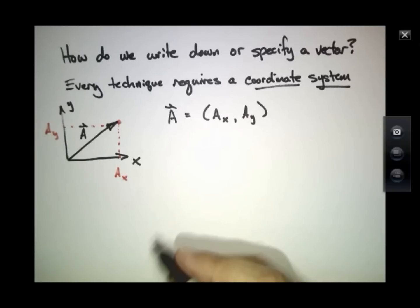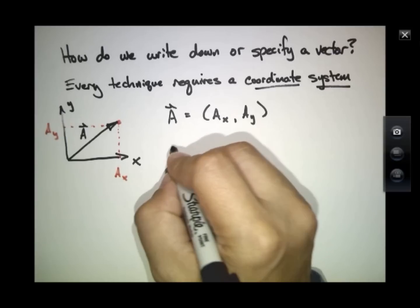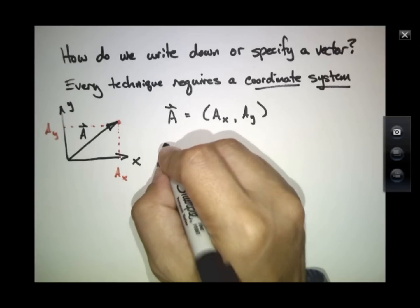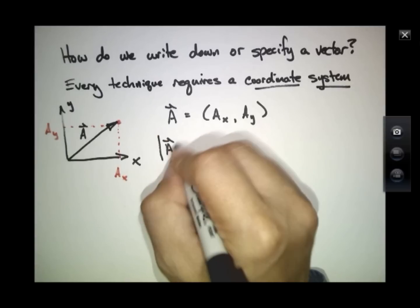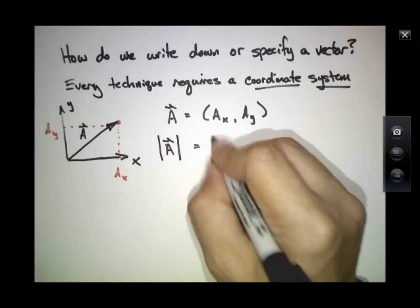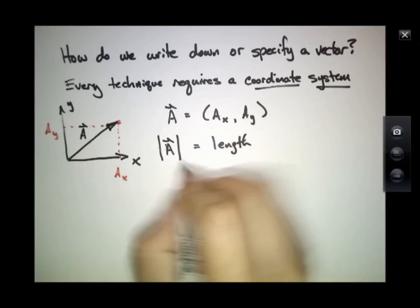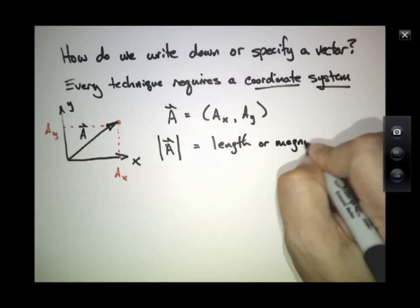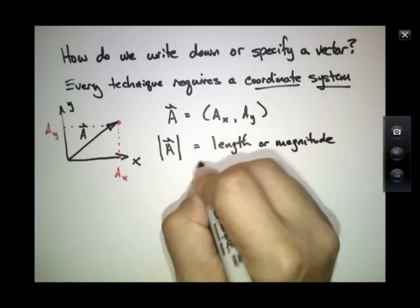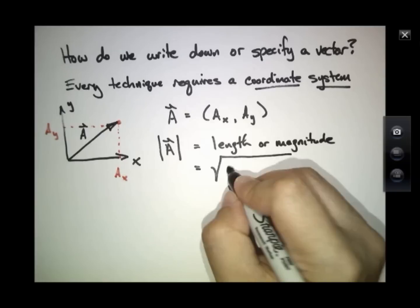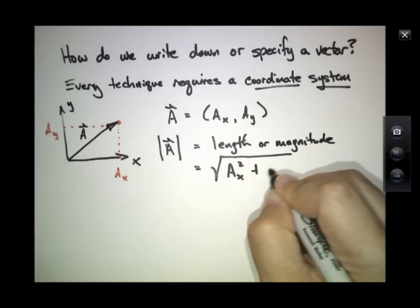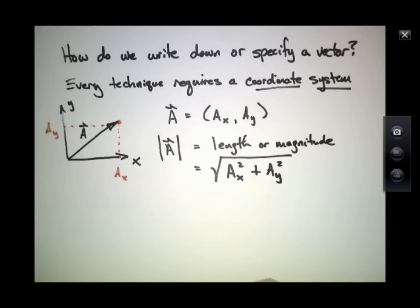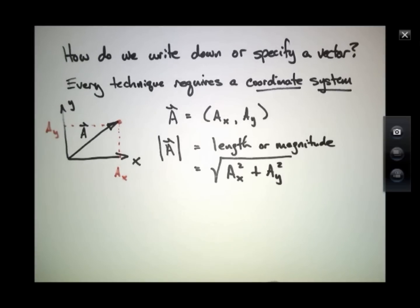And what you would be able to tell me, sort of implicitly, is that the length, the amount of this thing that you have, which is sometimes denoted as putting a little absolute value sign around the vector, this would be equal, just by the Pythagorean Theorem, the quantity square root of A x squared plus A y squared.